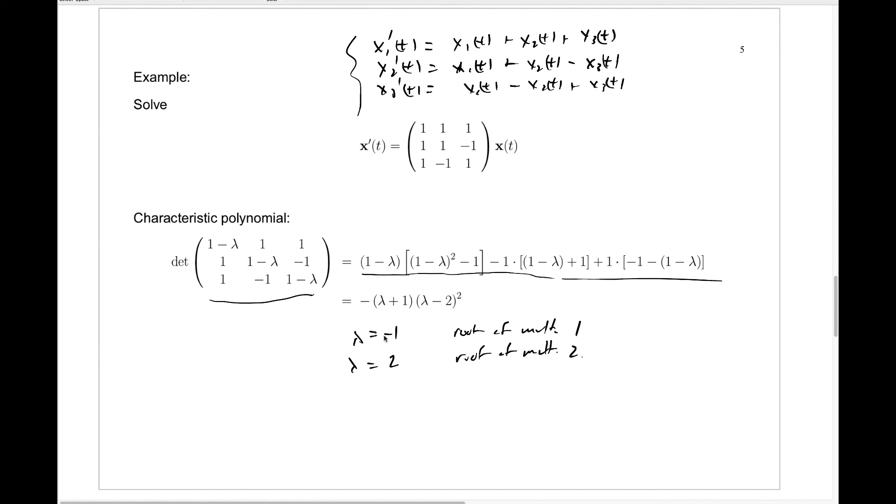What does that tell us? That tells us we'll have one eigenvector up to non-zero scalar multiples corresponding to lambda equals minus 1, and for lambda equals 2, without doing the work ahead of time, we know we might have a one-dimensional eigenspace, which means just a single independent eigenvector corresponding to lambda equals 2, or there might be two independent eigenvectors corresponding to lambda equals 2.